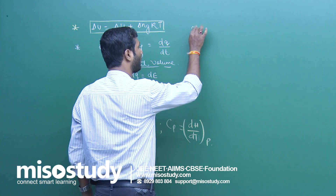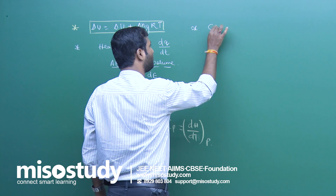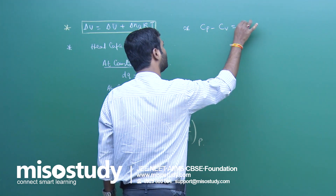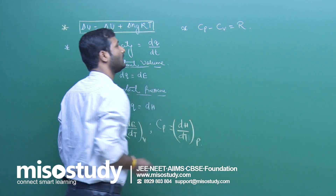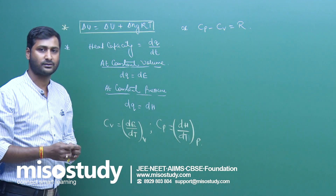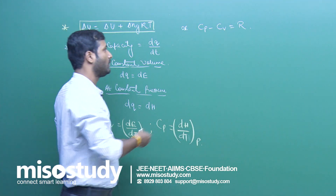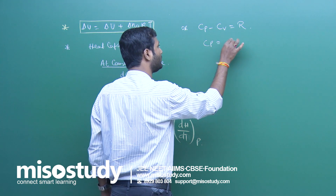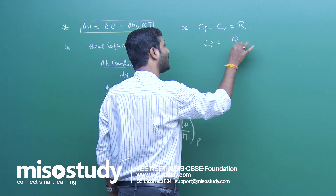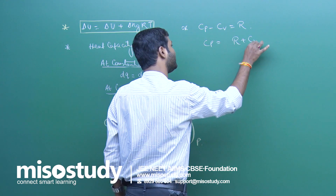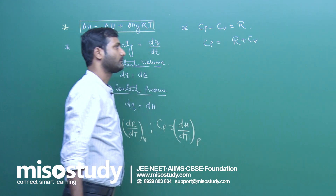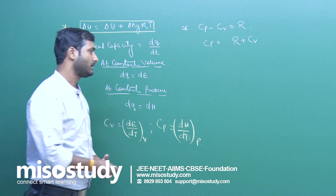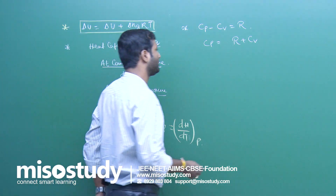As we all know, Cp minus Cv is equal to R, where R is the gas constant. We can also say Cp is equal to R plus Cv.